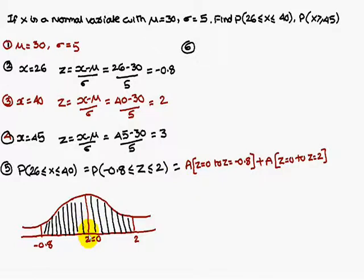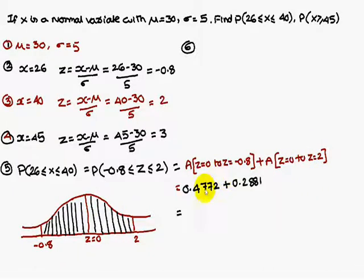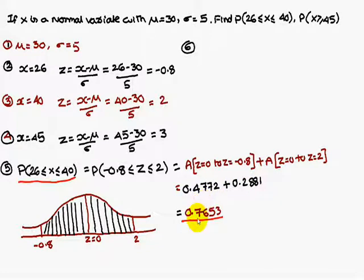The required area equals the area from Z equal to 0 to Z equal to 0.8, plus the area from Z equal to 0 to Z equal to 2. From the normal distribution table, these values are 0.2881 and 0.4772 respectively. Adding these two values gives 0.7653. Therefore, the probability of 26 less than or equal to X less than or equal to 40 is 0.7653.